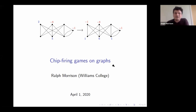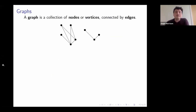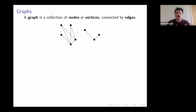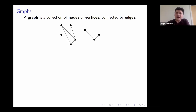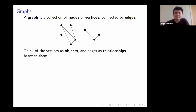What do I mean when I say a graph? For me, a graph is just a collection of nodes or vertices — I'll usually call them vertices. I draw those as little dots. In this picture you see eight thick dots — those are the vertices — and those dots are connected by edges, which are the thin lines I've drawn connecting things up.